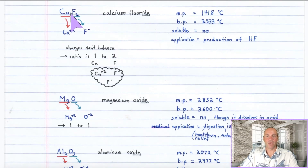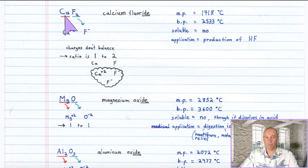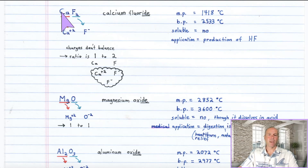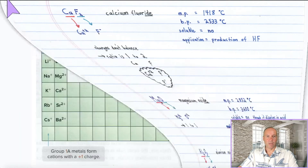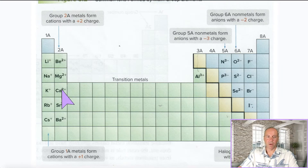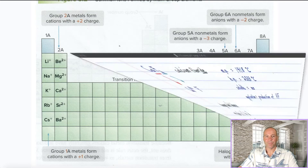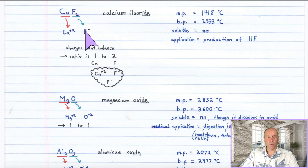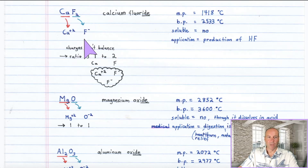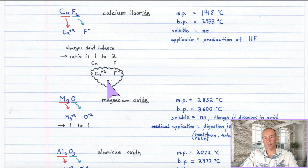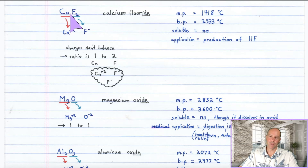Our next example is CaF₂. This is calcium and fluorine, so the name is calcium fluoride. You get the full element name for the metal cation and then the non-metal gets the "-ide" suffix. Calcium is in the plus two column and fluorine is in the minus one column. It makes sense that you have two of the negative fluorides to balance the plus two calcium — the ratio is one to two. So the formula is CaF₂; there are always twice as many fluorides as calcium.